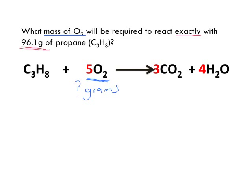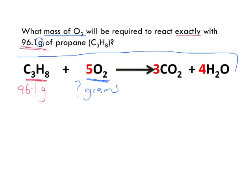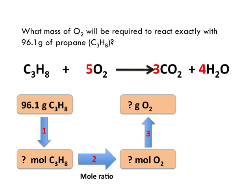Your given is the grams of propane — 96.1 grams. So how do you go about solving this problem? Whenever I see grams, I know I'm going to convert that to moles, and we're going to be using this equation. This layout is sometimes called the mole tunnel, as it's referred to in some textbooks. This is how you're going to solve this problem.